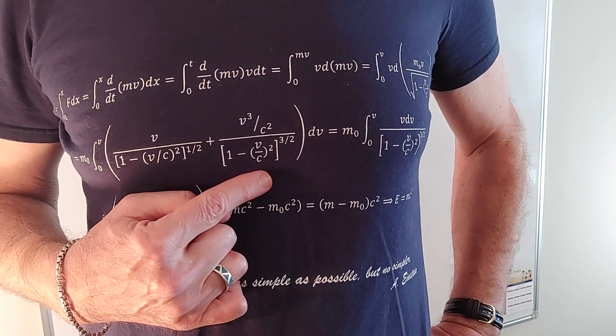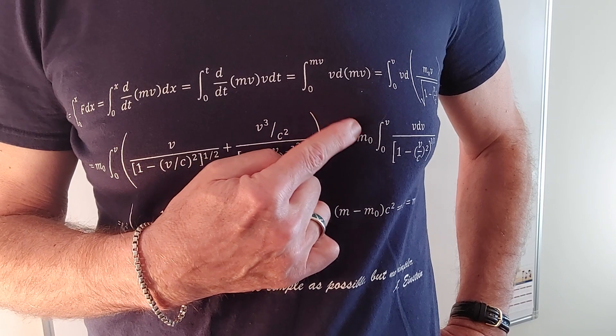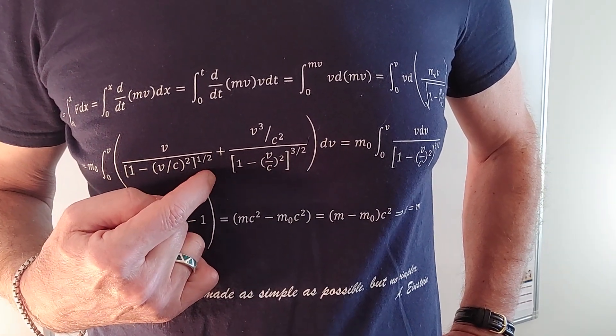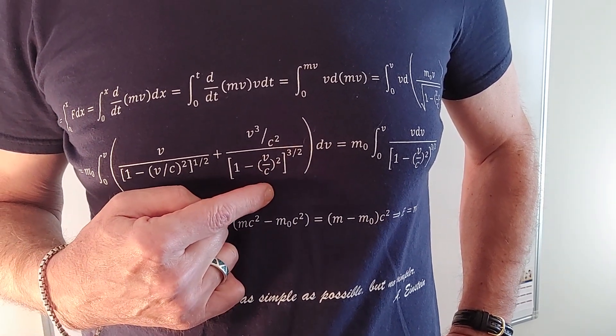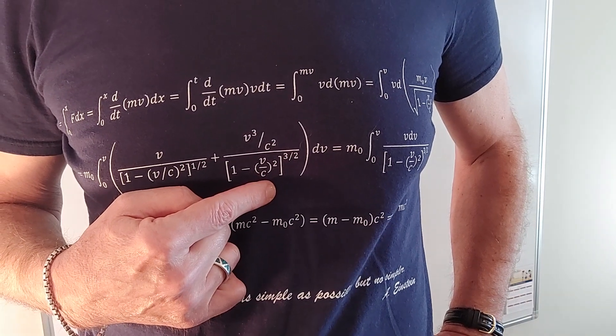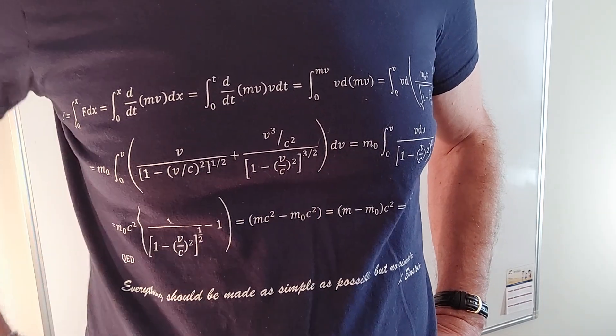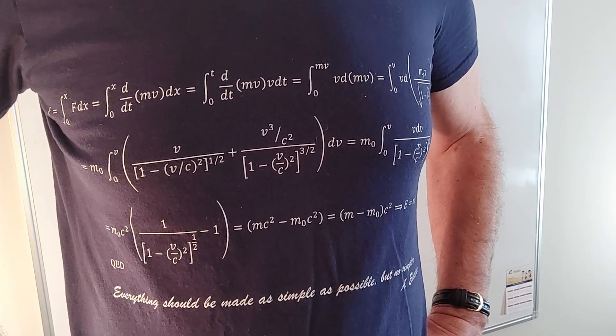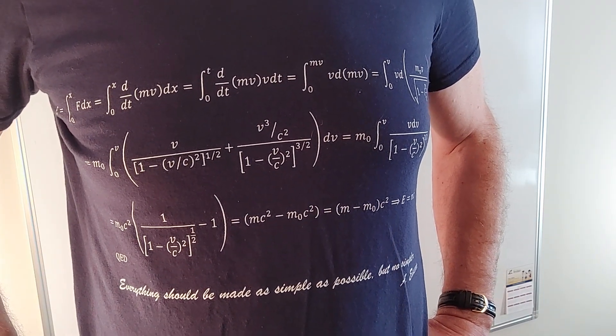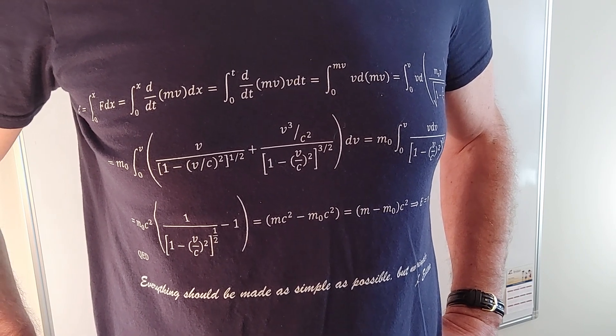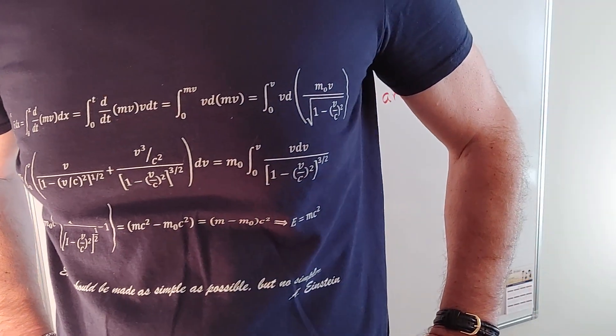Another reason I'm wearing this t-shirt is because it has the relativistic factor, one minus v over c squared in it. And that's what I want to do today is save you some time. If you travel close to the speed of light, time slows down and masses increase. Very interesting phenomenon.